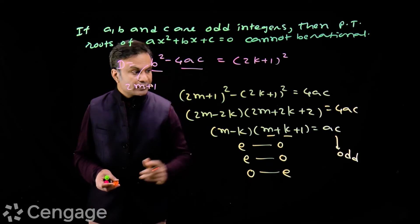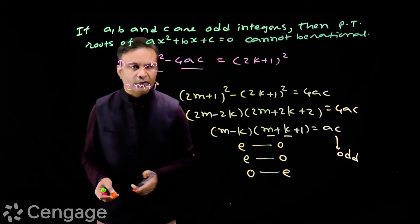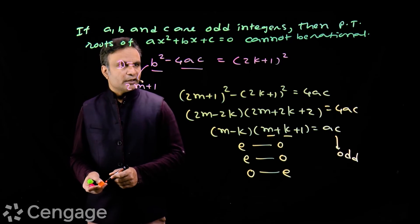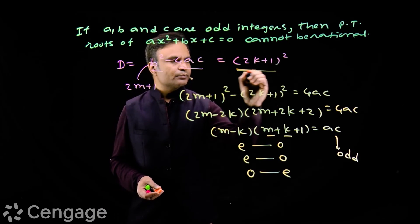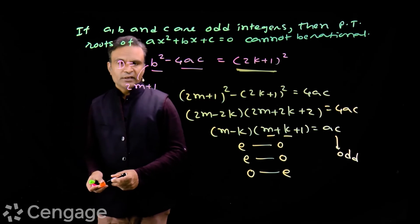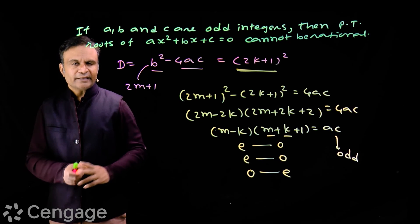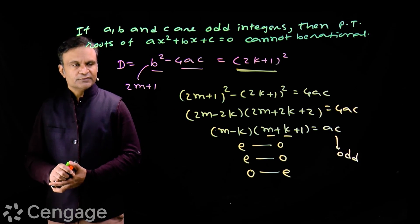So in any case, LHS is even - product of even and odd is even integer. But RHS is odd integer. So clearly we have here contradiction. This assumption is wrong that discriminant is perfect square, so roots cannot be rational. Here we are choosing a method of contradiction to prove this.